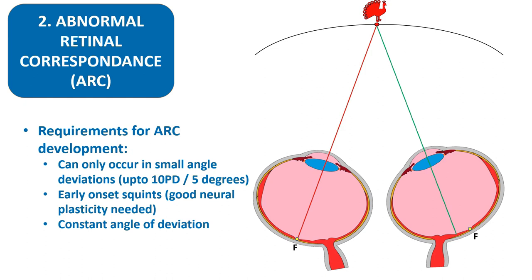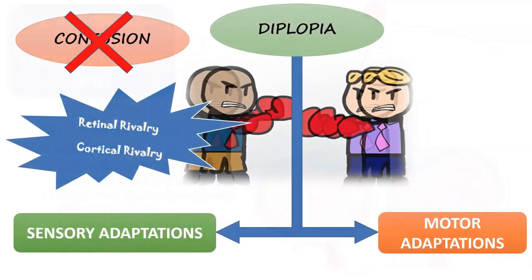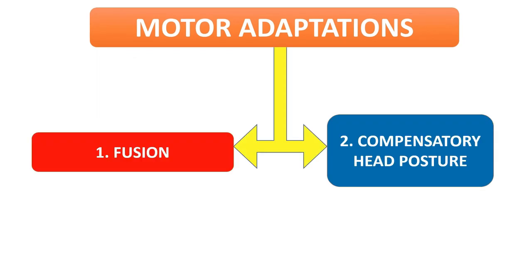Whether suppression will develop or ARC will develop for a given squint depends on many factors, and the brain will ultimately decide whichever is favorable for that particular case. These are the sensory adaptations. Now let us go on to the motor adaptations of squint, which are again two: fusion and compensatory head posture.